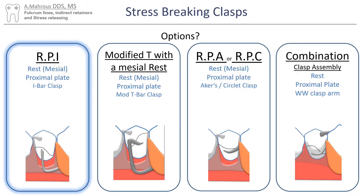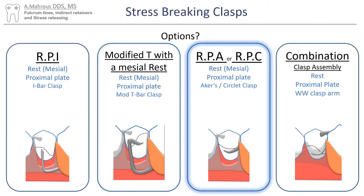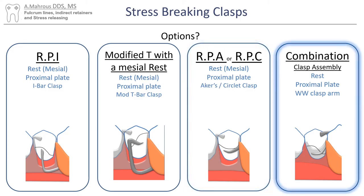Four stress-breaking clasp assemblies have been proposed to help break or relieve the stresses on the abutment teeth. The RPI clasp consists of a mesial rest, a proximal plate, and an I-bar. The same design can be made with the I-bar substituted with a modified T clasp. The RPA or RPC clasp is composed of a mesial rest, a proximal plate, and an Akers or cast circumferential clasp. The combination clasp is composed of a mesial or distal rest, a proximal plate, and a wrought wire clasp.